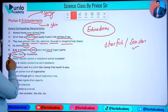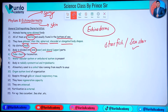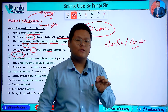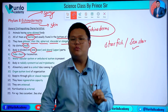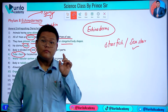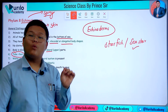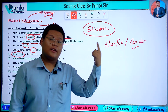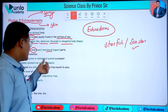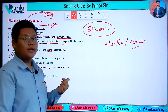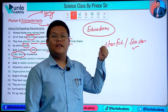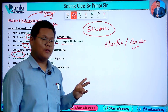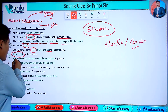The locomotion organ is the tube feet. There is a water vascular system, also called the ambulacral system. This water canal system is present in Echinoderms and is used for respiration and feeding.